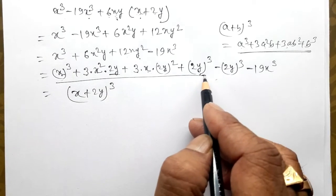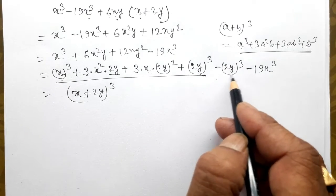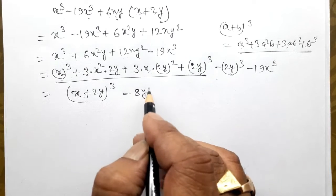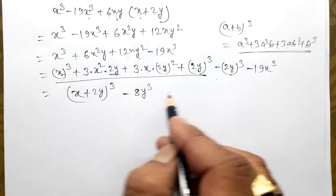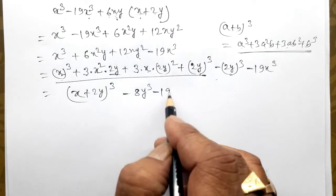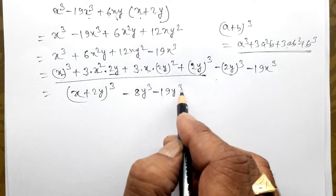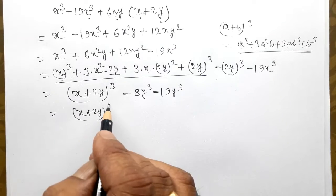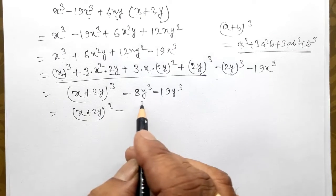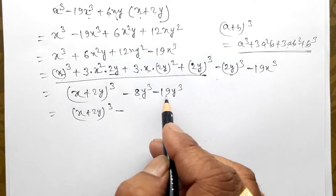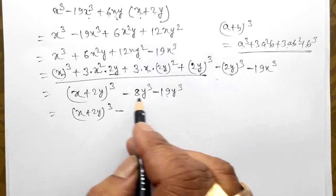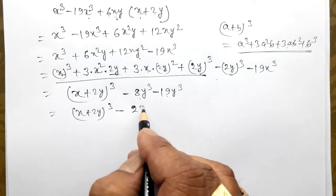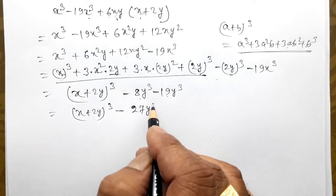Here we have a sign on it now. Here we have minus 2y cubed, 8y cubed. Then here, x plus 2y. Here we have minus 2y which gives me negative 1 cubed.